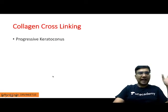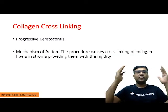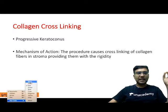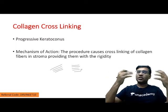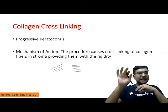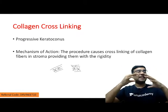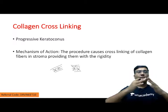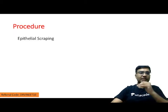Collagen cross-linking is done in cases of progressive keratoconus. The mechanism of action is that we make covalent bonds between the various collagen fibers in the lamellar arrangement within the stroma. By making these bonds we are making the collagen fibers rigid and stiff, so they do not get more deformed and cause further progression of keratoconus.